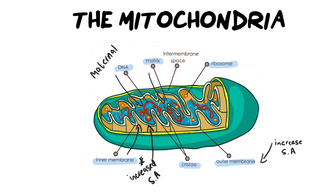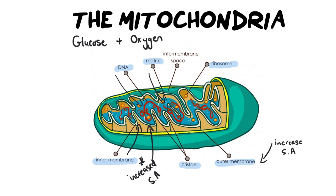Now let's discuss what the mitochondria does. For many of us, we need to know this very important formula. Depending on what grade you are in and how advanced you are, this equation might be a little more than what you need. This is the equation we use to describe what happens inside the mitochondria: the mitochondria takes glucose and combines it with oxygen, and that produces energy — in the form of ATP.